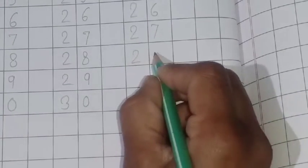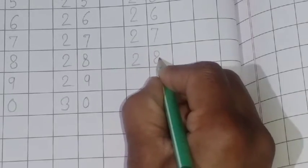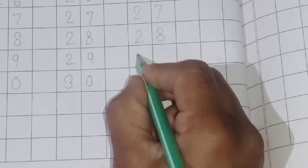Next spelling 28. T-W-E-N-T-Y, twenty. E-I-G-H-T, eight.